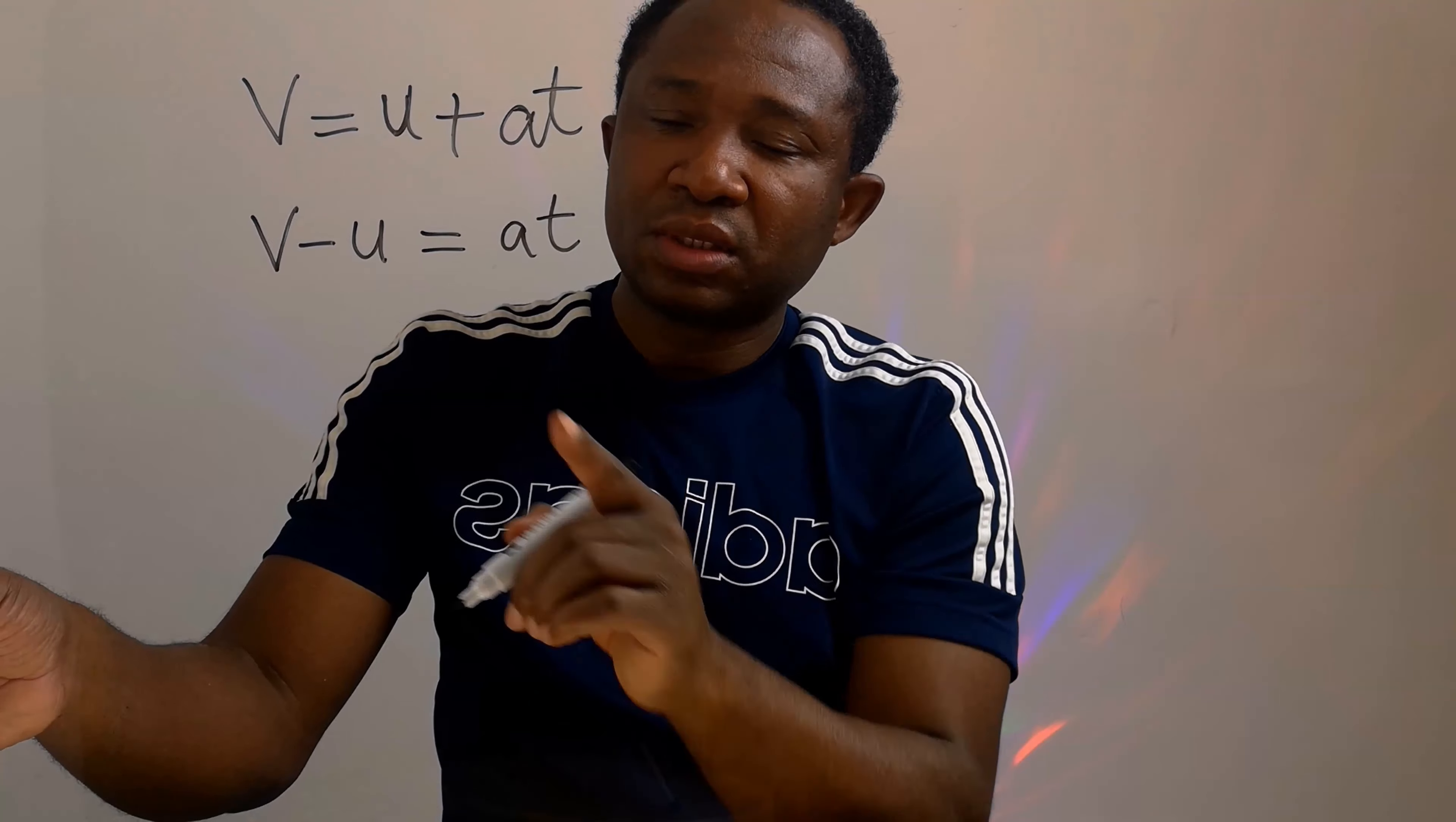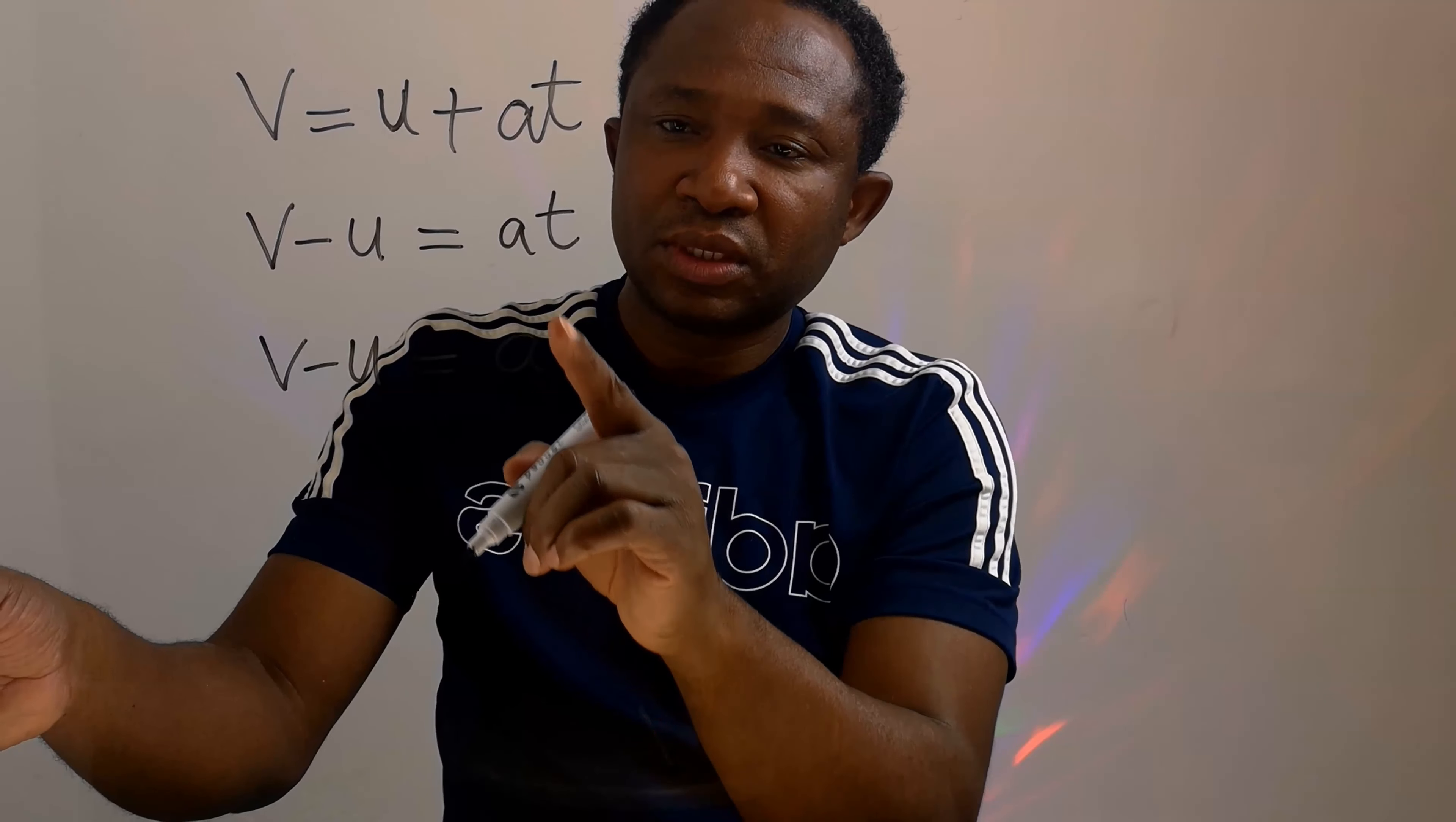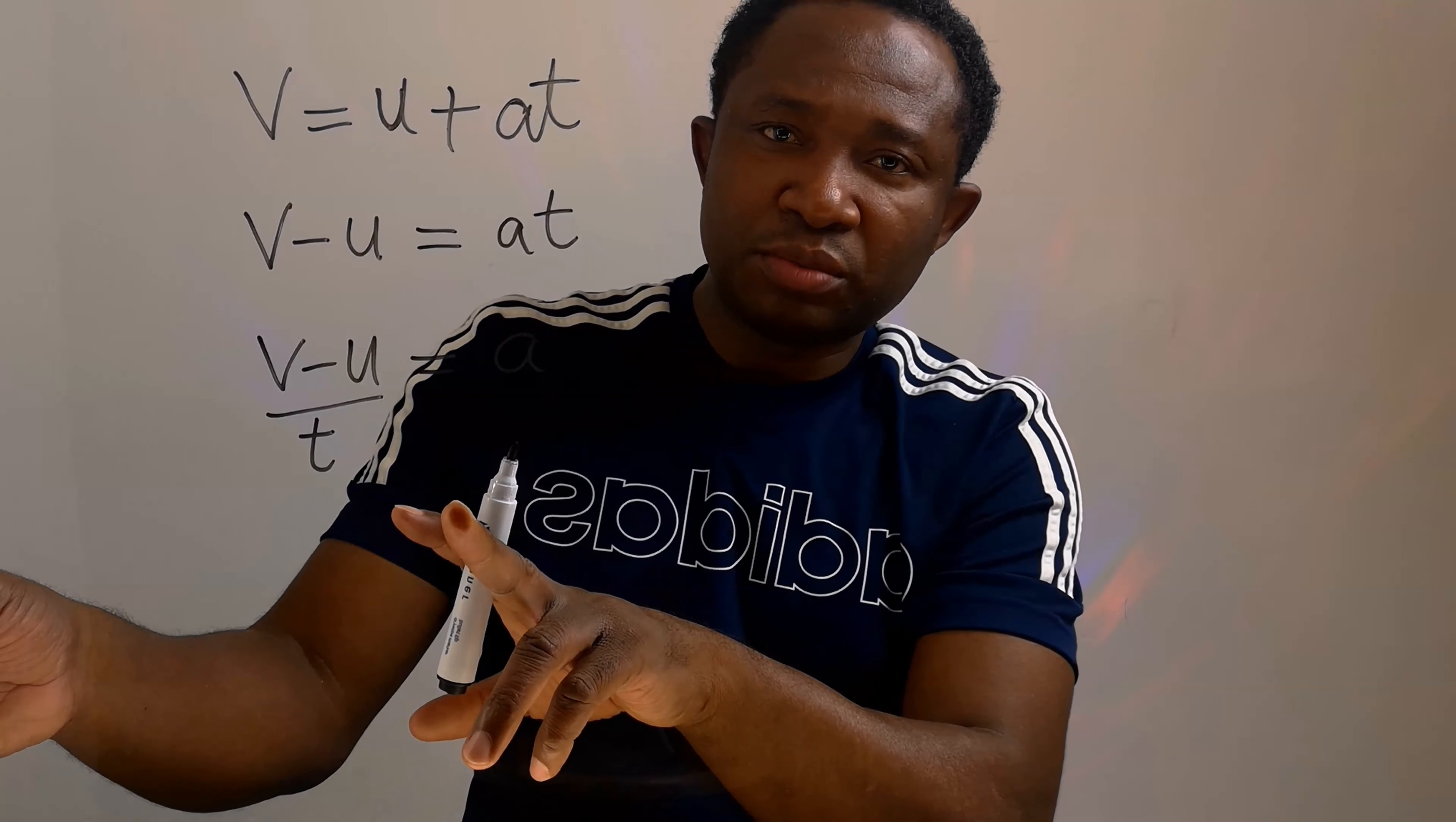Our aim is to isolate a. We're going to have v minus u on this side. Only a will remain. t is multiplying a. On the other side it will divide. This becomes our answer.